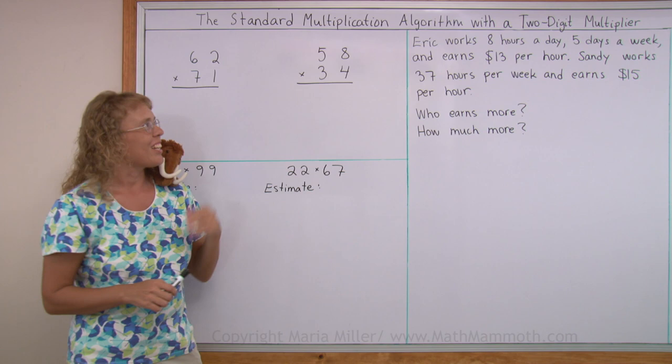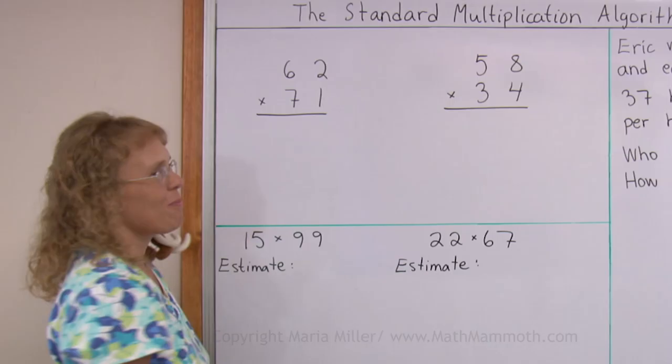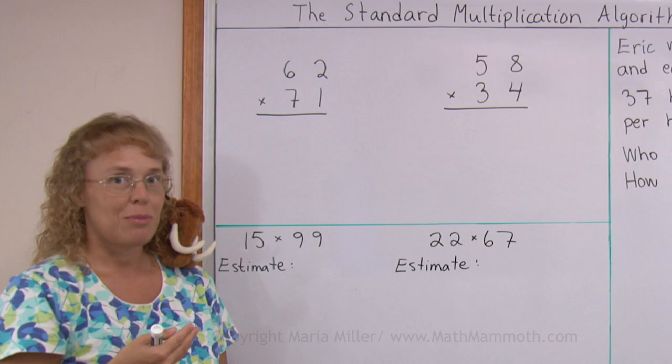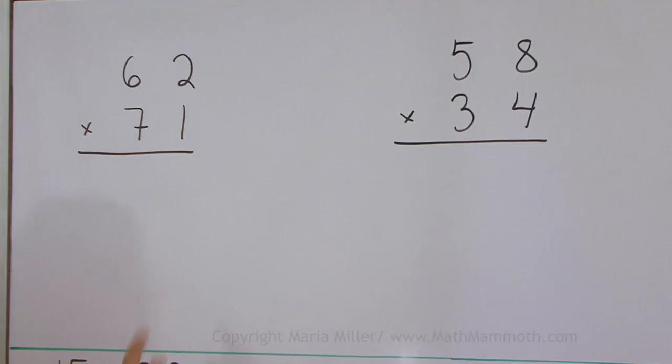So, in this multiplication, we're going to do 1 times 62, and then after that, we're going to multiply 70 times 62. Two different multiplications. We're going to write the answers under each other and then add. Let's get started. First 1 times 62, which is really easy. 1 times 2 is 2, 1 times 6 is 6.